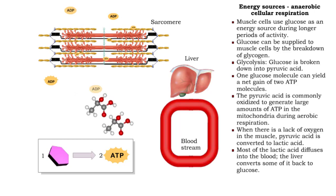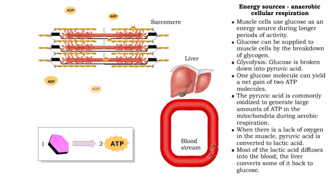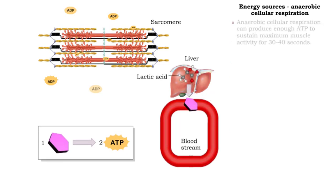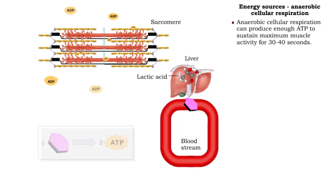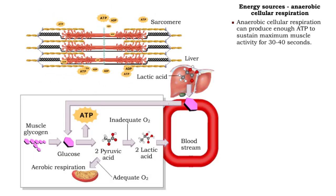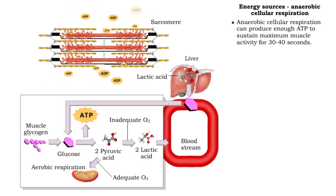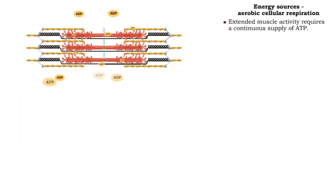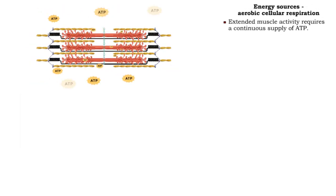Most of the lactic acid diffuses into the blood. The liver then converts some of it back to glucose. With these processes, anaerobic cellular respiration can produce enough ATP to sustain maximum muscle activity for about 30 to 40 seconds.